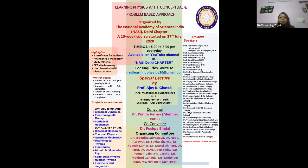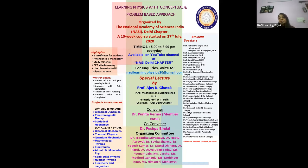In this series of learning physics with a conceptual and problem-based approach organized by the National Academy of Sciences India, NASI Delhi chapter, we have a 10-week course started on the 27th of July. Classical dynamics and electromagnetic theory are almost over, and we are now persisting with statistical mechanics and about to start nuclear physics. The intended gap from 10th through 19th of August has been filled with physics lectures due to the good response from students.